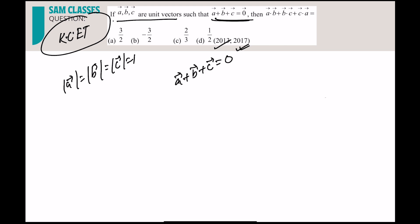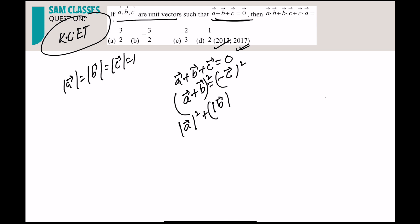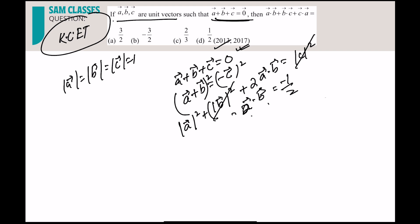Send one vector to the other side and square it up. What you get is: mod a² + mod b² + 2(a · b) = mod c². Since all are unit vectors, mod a² = 1 and mod b² = 1, so a · b = −½. Similarly, b · c = −½ and c · a = −½. Add all three: you get −3/2.